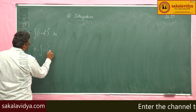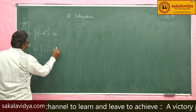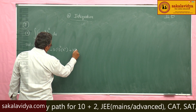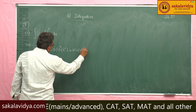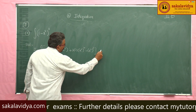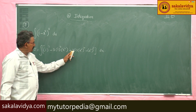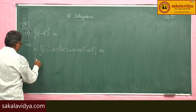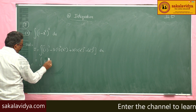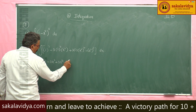Expanding using the (a - b)³ = a³ - 3a²b + 3ab² - b³ formula: we get 1³ - 3(1²)(x²) + 3(1)(x²)² - (x²)³ dx, which simplifies to 1 - 3x² + 3x⁴ - x⁶ dx.